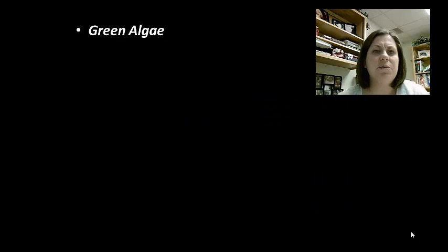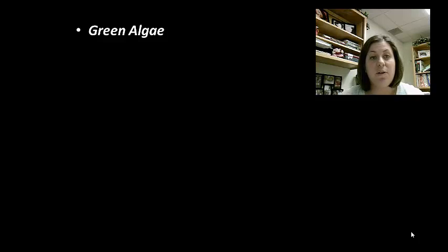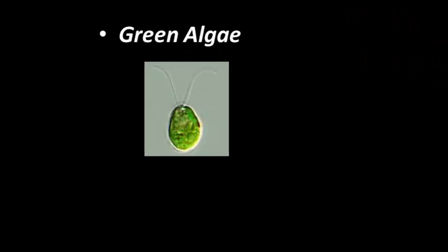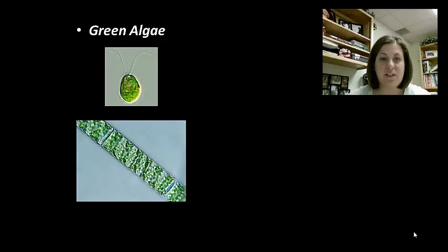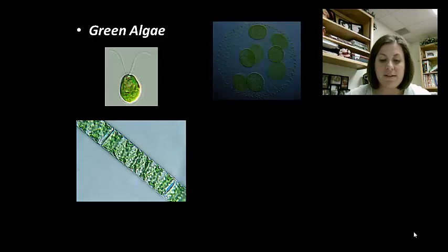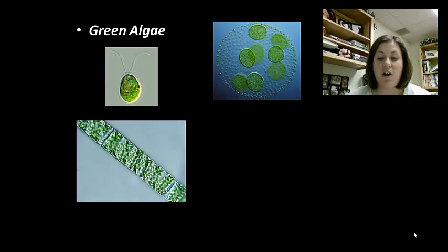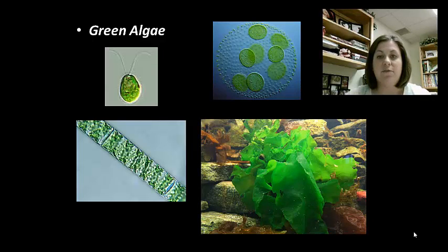The next group is the green algae, which is what we normally think of when we think of algae looking like a plant. Green algae contain both chlorophyll A and B, have a cell wall made of cellulose similar to plants, and store sugars as starch. There are various degrees of cellular organization: unicellular flagellated algae called Chlamydomonas; unicellular filamentous algae called Spirogyra; Volvox, an example of colonial green algae; and finally the multicellular form called Ulva, or sea lettuce — what you normally think of as green algae.